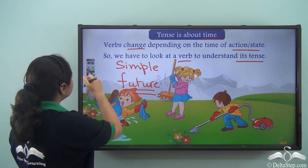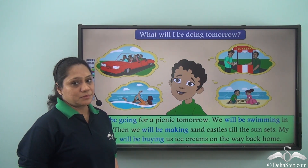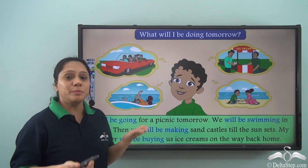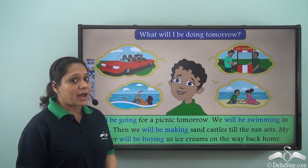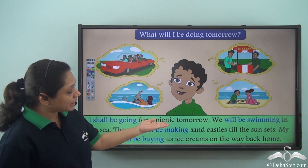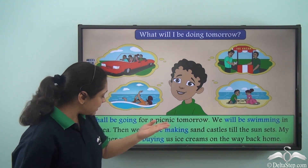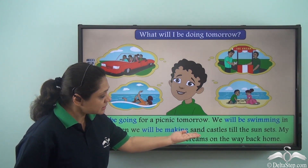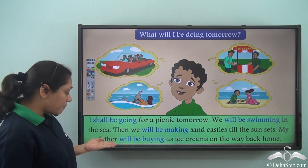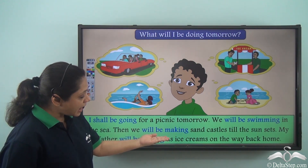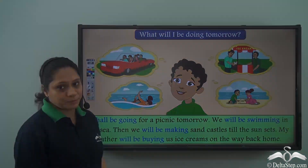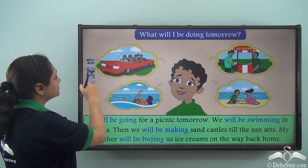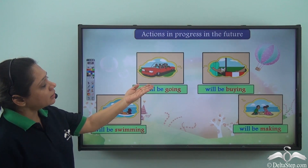This is Ram, a good friend of mine. I asked Ram, 'Tomorrow is Sunday — what will you be doing tomorrow?' Ram replied, 'I shall be going for a picnic tomorrow. We will be swimming in the sea, then we will be making sand castles till the sun sets. My father will be buying us ice creams on the way back home.'